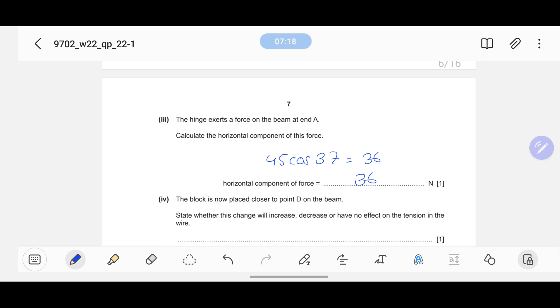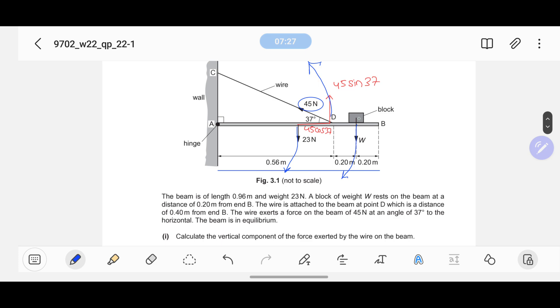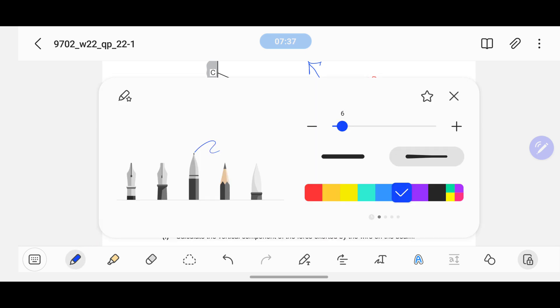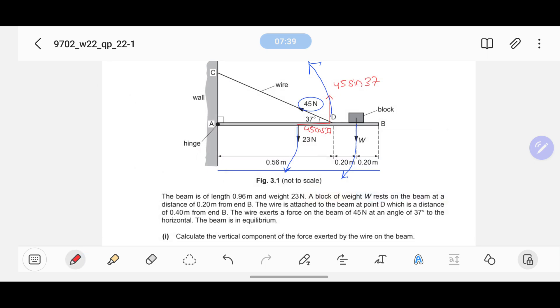The block is now moved closer to point D on the beam. What's happening is this block, right now it's between D and B, and now it's moving towards D. So now it's moving closer to D.